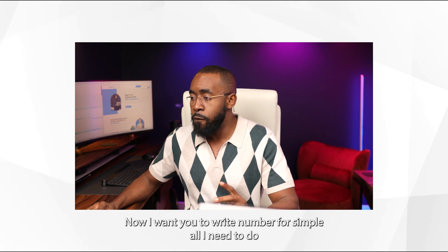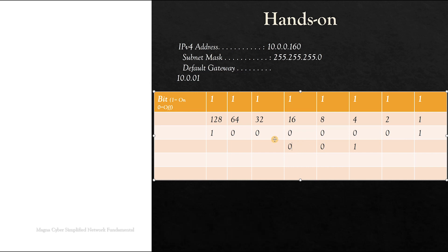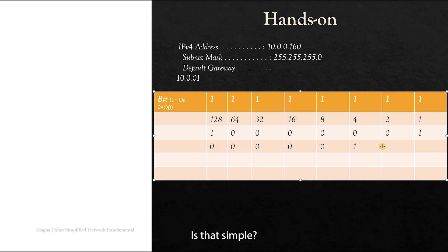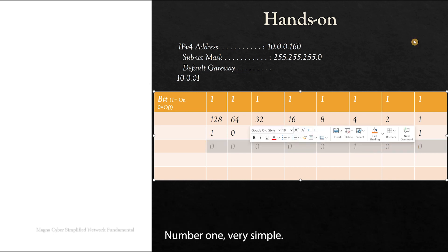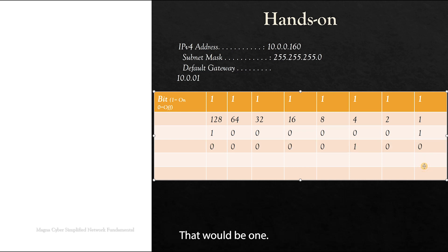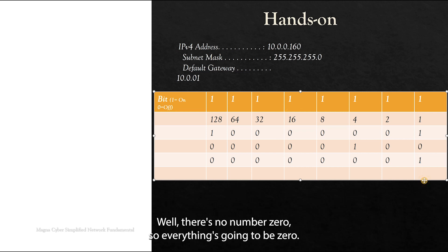Let's say now I want you to write number four. Simple — all I need to do is turn the bit on for the four position and turn all other bits off. Converting from decimal to binary and from binary to decimal is that simple. So this number right here in binary is the number four. If they say write number one, that would be 0,0,0,0,0,0,0,1 — one is on and everything else is zero. Now if they say write number zero — well, there's no number zero — so everything is going to be zero.